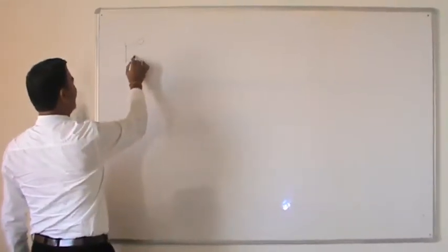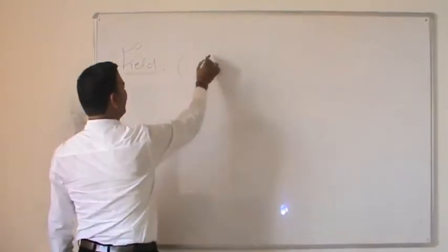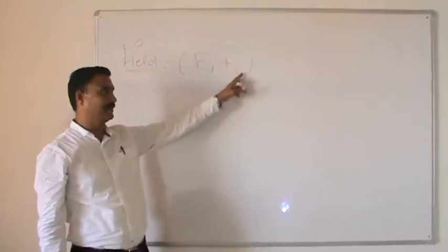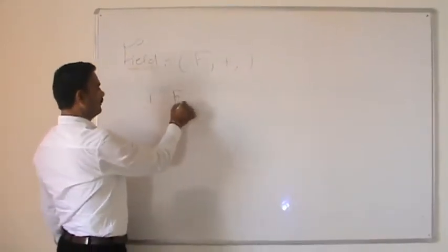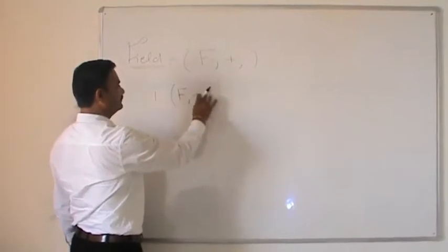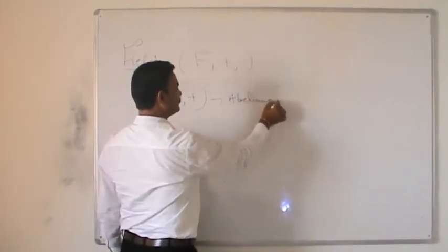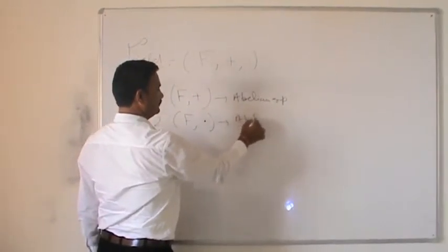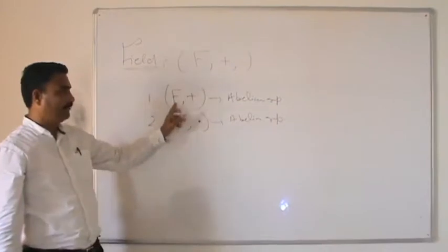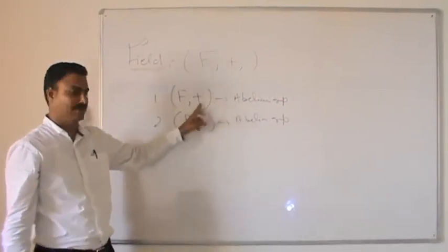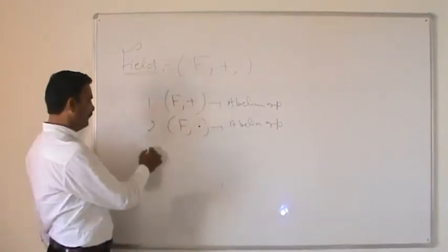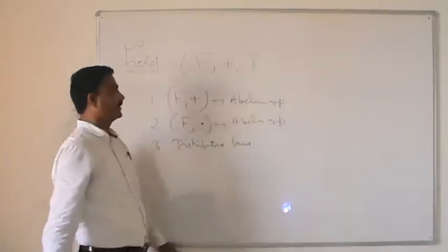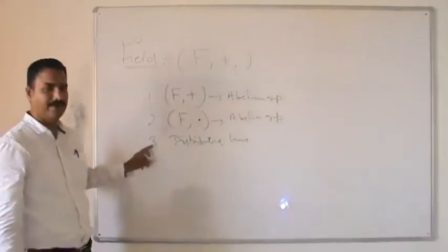The next definition is field, denoted by (F, +, ·), where F is any non-empty set with two binary operations, addition and multiplication. If F forms an abelian group for the additive operation and also forms an abelian group for the multiplicative operation — meaning F must possess five abelian group properties for both operations — and finally the distributive law holds in F, then any non-empty set F having these three properties is called a field.